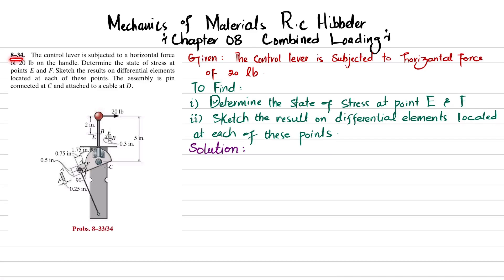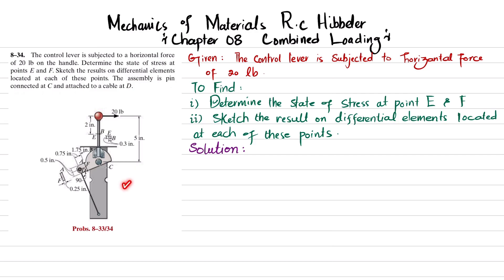Welcome back, problem 8-34. This problem is taken from Mechanics of Materials by R.C. Hibbeler, Chapter 8, Combined Loading. The control lever is subjected to a horizontal force of 20 pounds on the handle. Determine the state of stress at points E and F and sketch the results on differential elements at each point. The assembly is pin connected at C and attached to a cable at D.